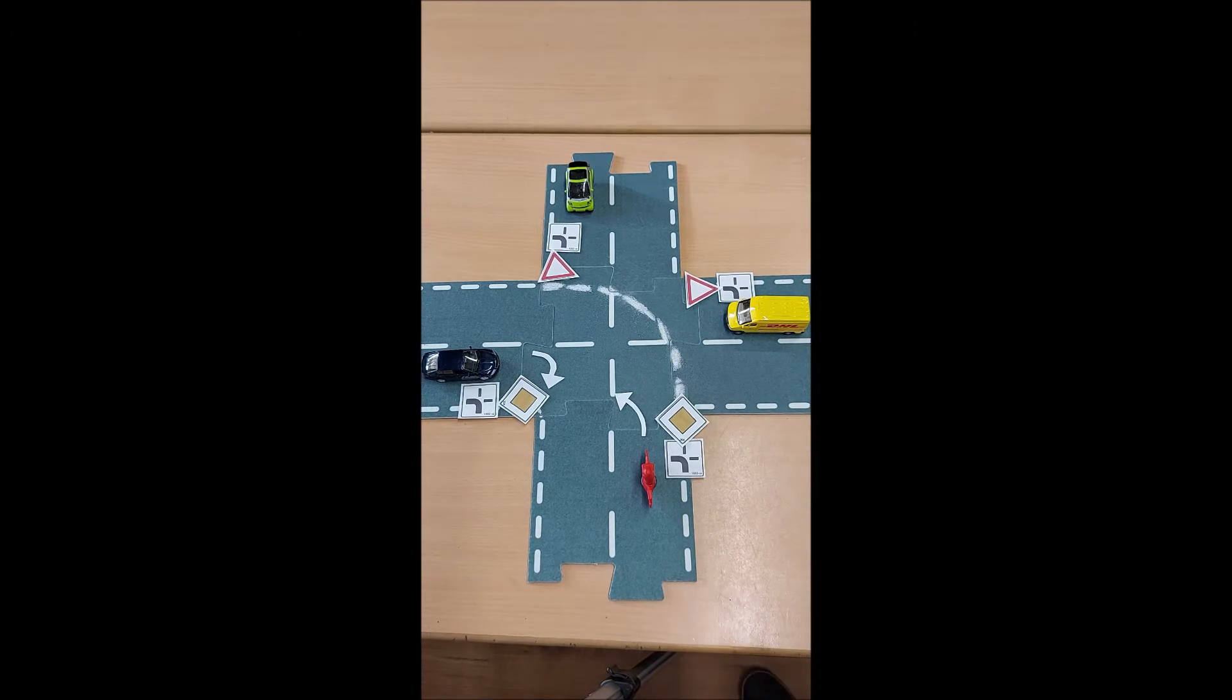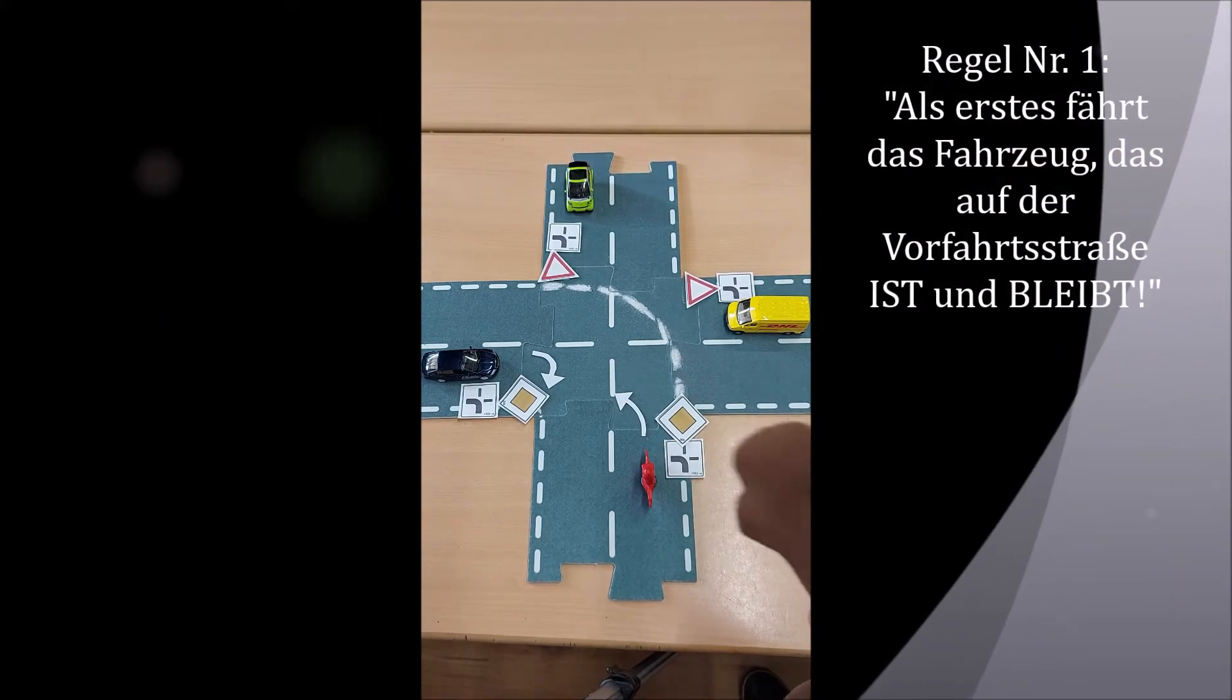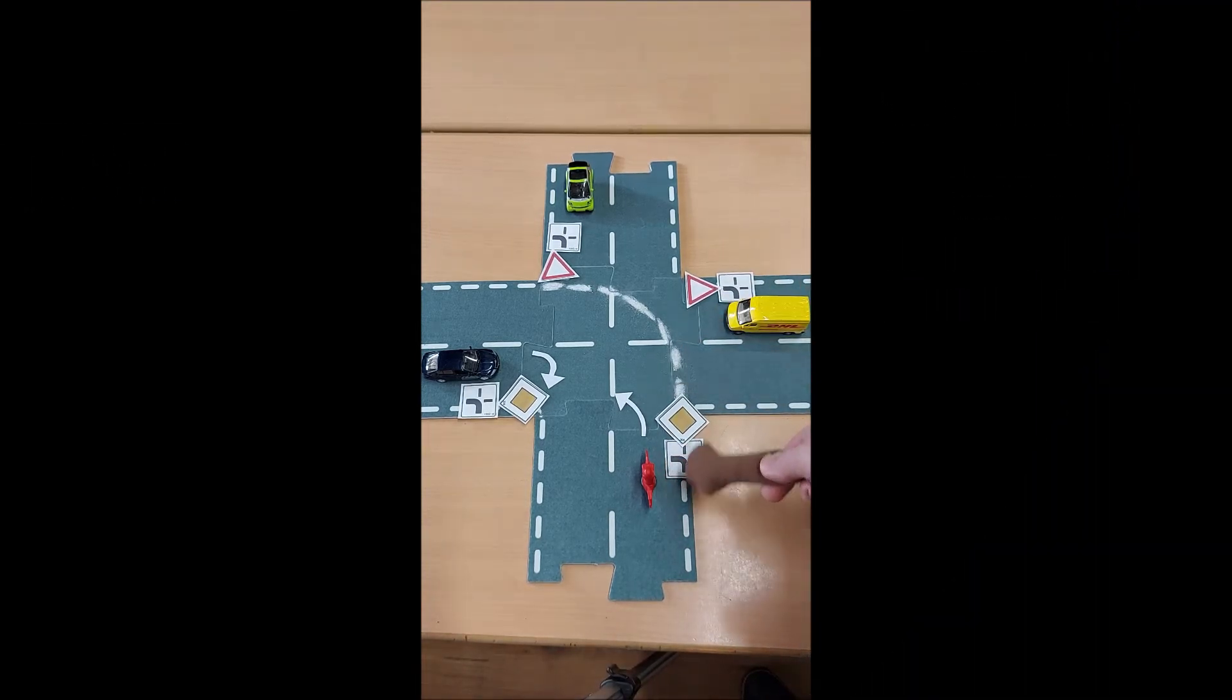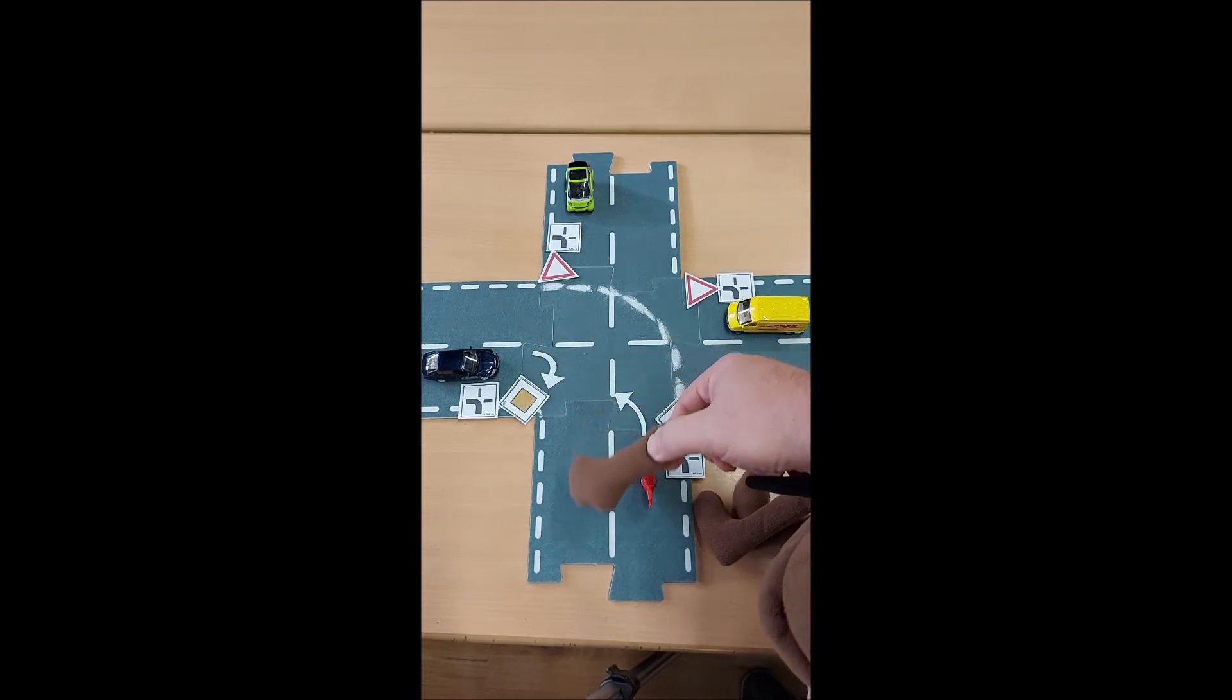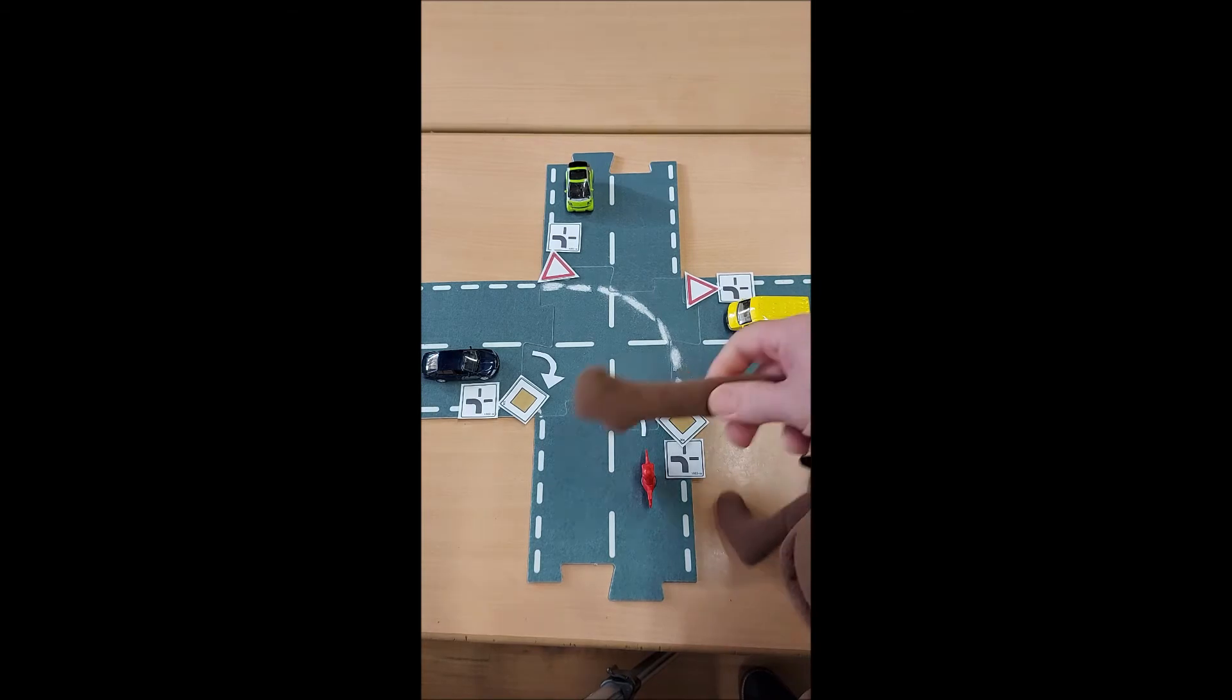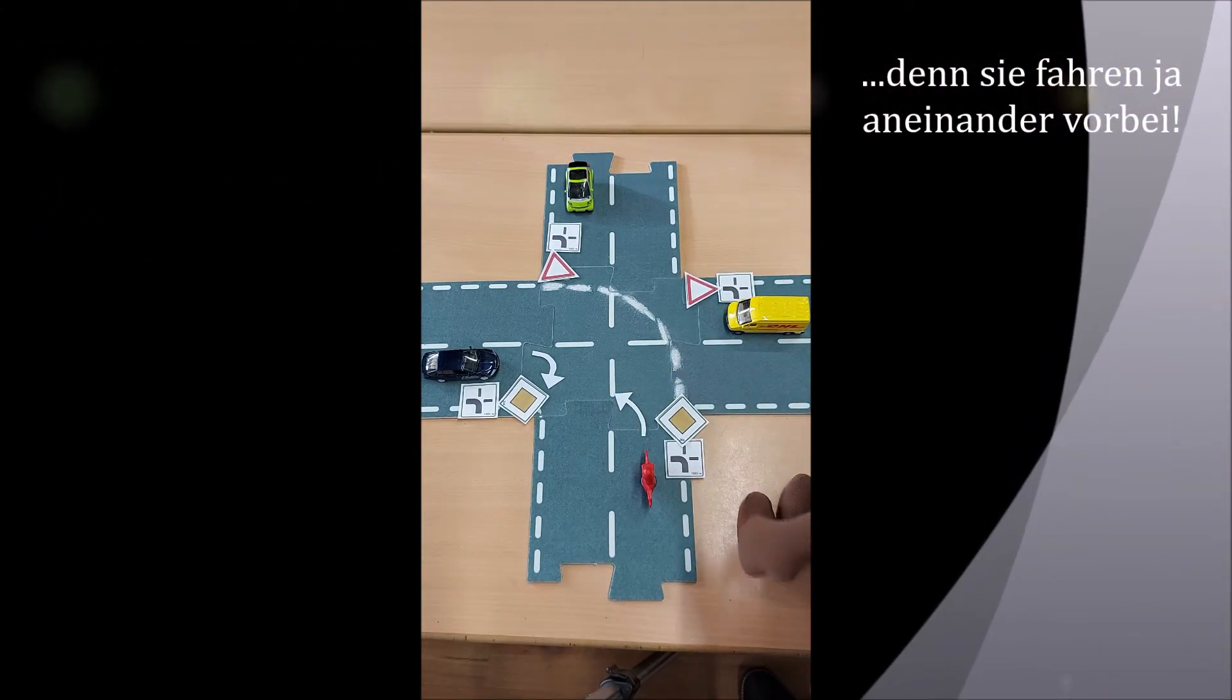Regel Nummer 1. Wer auf der Vorfahrtsstraße ist und bleibt, hat Vorfahrt. Der Fahrradfahrer, schaut mal, der ist auf der Vorfahrtsstraße und bleibt auch auf der Vorfahrtsstraße. Der darf als erstes fahren. Und das Auto ist auf der Vorfahrtsstraße und bleibt auch auf der Vorfahrtsstraße. Der darf auch als erstes fahren. Und da die eh keinen Unfall bauen, deswegen können sie beide gleichzeitig fahren.